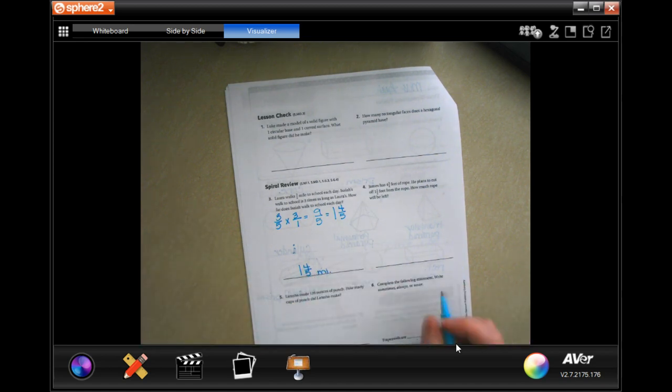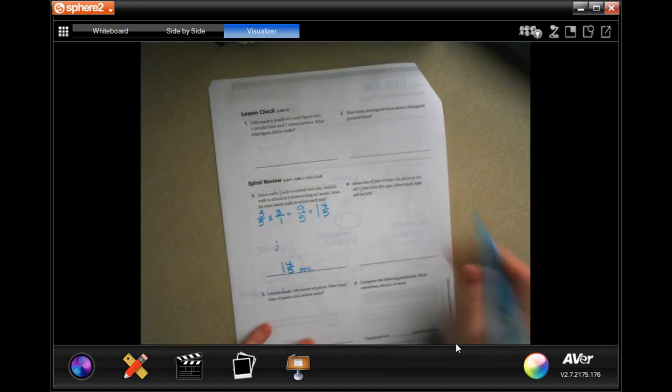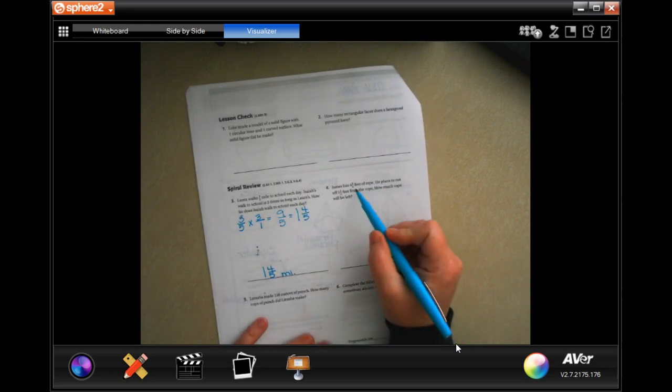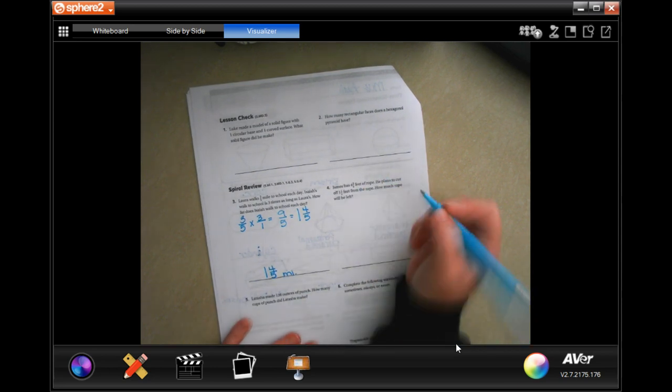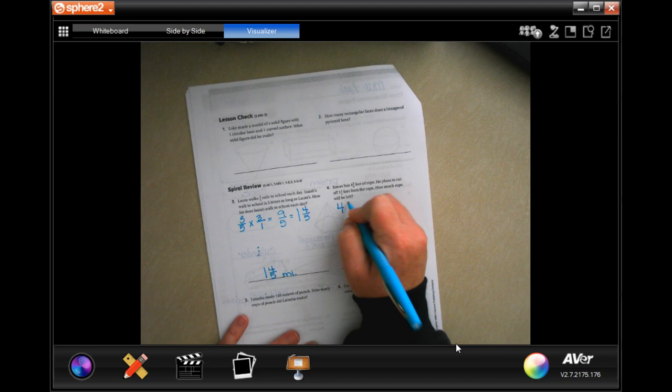James has four and three-quarters feet of rope. He plans to cut one and a half feet from the rope. How much rope will he have left? Okay, so four and three-quarters minus one and a half.